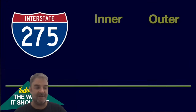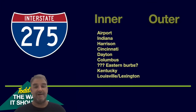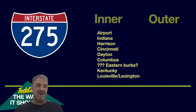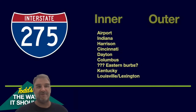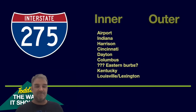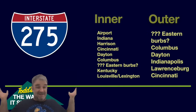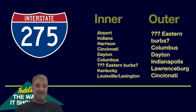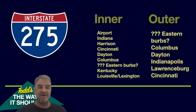So let's talk about Todd's 'the way it should be.' For the inner loop, I would say it should be signed like it is: airport, then Indiana. Then Harrison in Ohio before I-74 — that's the bigger suburb you get before I-74. Then Cincinnati, then Dayton, Columbus, like they do. After Columbus, eastern suburbs, because there's no dominant suburb on the eastern side, and no particularly large city that any of the roads on the eastern side of the loop go to. Eastern suburbs might be the best answer, or maybe this is one of the rare cases where not having anything at all is the way to go. Then Kentucky once we get far enough into those eastern suburbs, and finally Louisville and Lexington. For the outer loop, I'd start with eastern burbs — it's tough to figure out what exactly should be there, but that'd probably be the best thing. Then Columbus like they do, then Dayton, Indianapolis, Lawrenceburg, and finally Cincinnati.